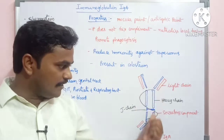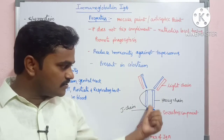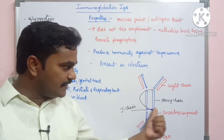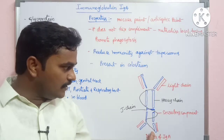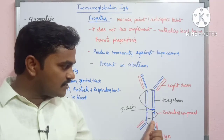The structure of IgA is a typical Y-shaped immunoglobulin structure. In secretory form, it exists as a dimer of immunoglobulin, containing a J chain and a secretory component, along with heavy chains and light chains.